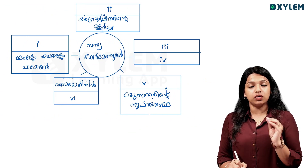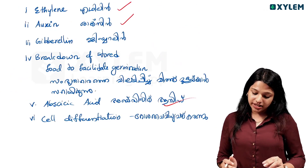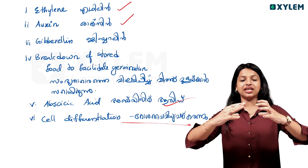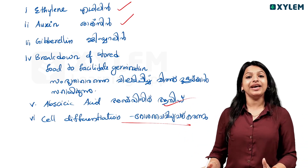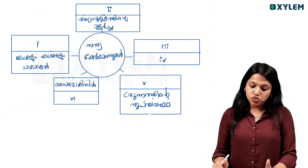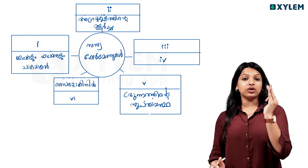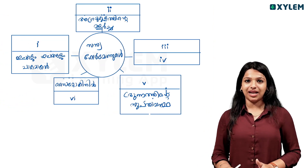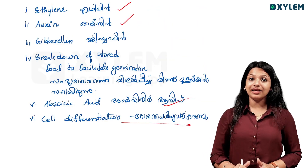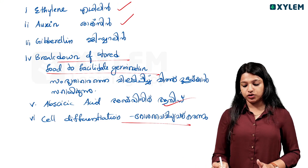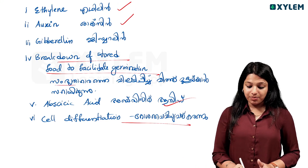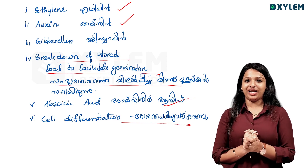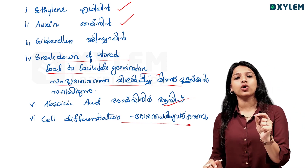Now cytokinin — what is the function of cytokinin? Cytokinin functions in cell differentiation. Cells differentiate into tissues with the help of cytokinin. We have auxin, cytokinin, abscisic acid, ethylene, and gibberellin. The function of gibberellin is the breakdown of stored food to facilitate germination. We have to learn these plant hormones.